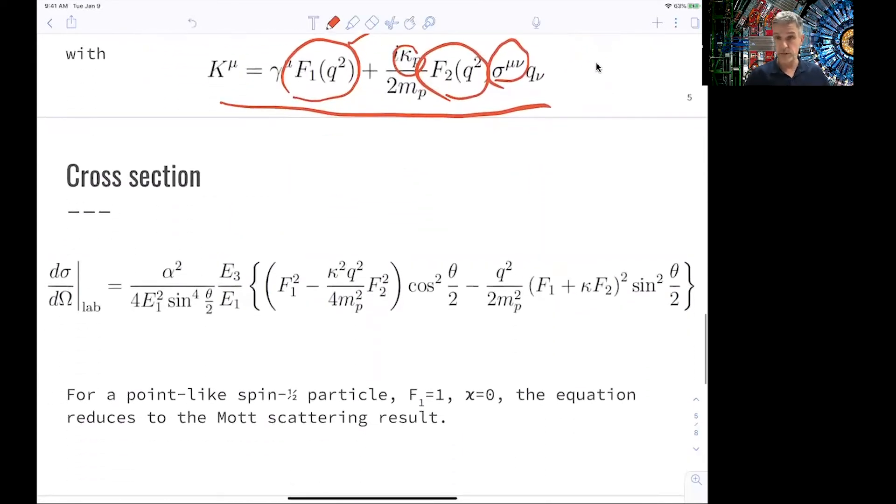If you then use this, we can calculate the cross-section again using this very same parametrization and get to this formula here in the laboratory frame. This looks rather complicated. But if you go back to our form factor definitions and set this one to 0 and this one to 1, you get back to our Mott scattering result which we had before.